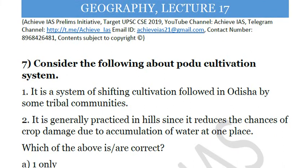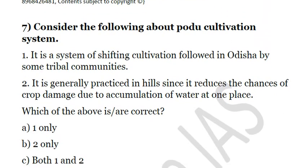The next question: consider the following about the Podu cultivation system. First, it is a system of shifting cultivation followed in Odisha by some tribal communities. Second, it is generally practiced in hills since it reduces the chances of crop damage due to accumulation of water at one place. Both statements are correct. It is practiced in Odisha — in fact, India's largest area under shifting cultivation is in Odisha.